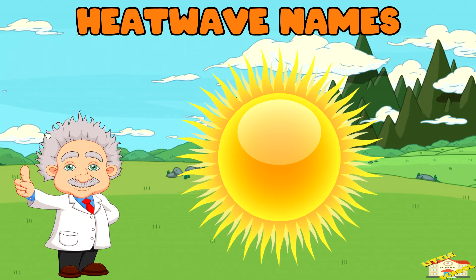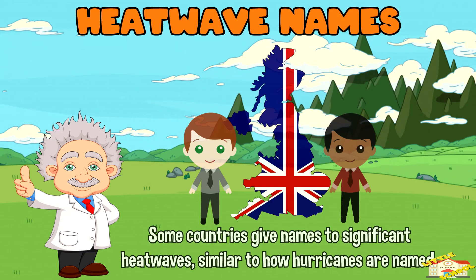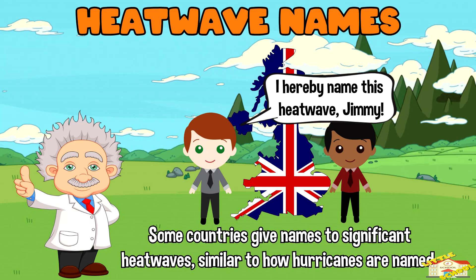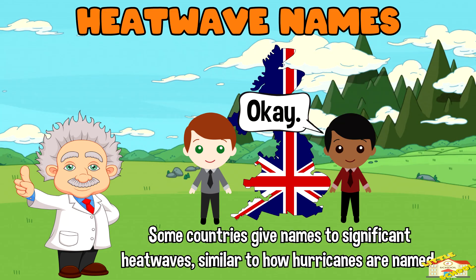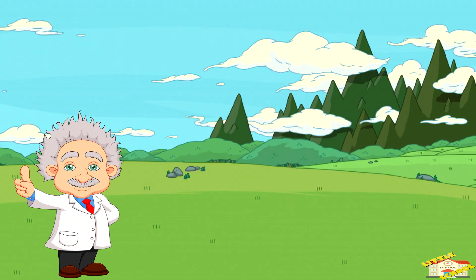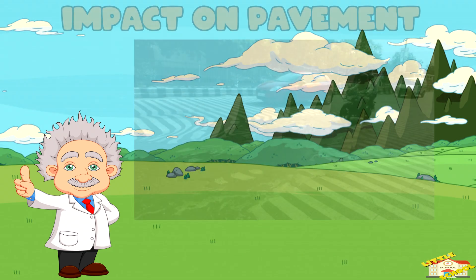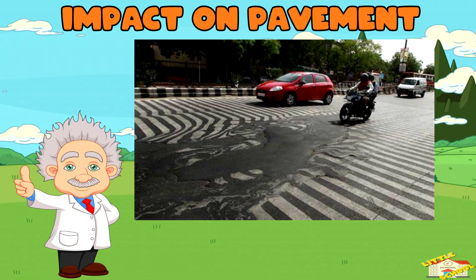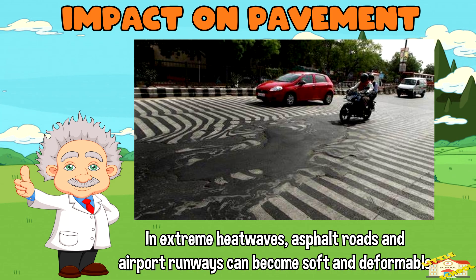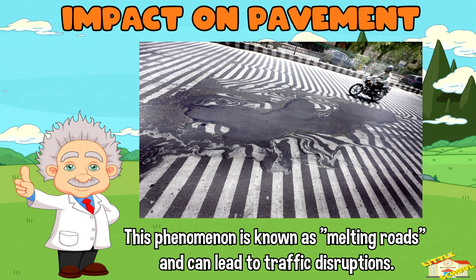Heat wave names: some countries, like the UK, give names to significant heat waves, similar to how hurricanes are named. Impact on pavement: in extreme heat waves, asphalt roads and airport runways can become soft and deformable, causing issues for transportation. This phenomenon is known as melting roads and can lead to traffic disruptions.